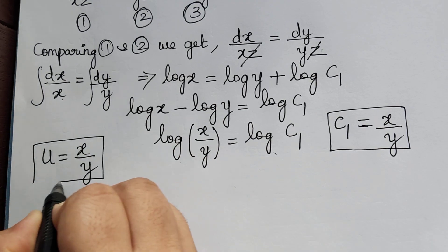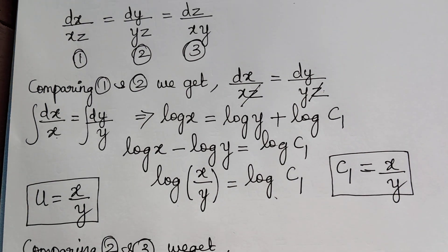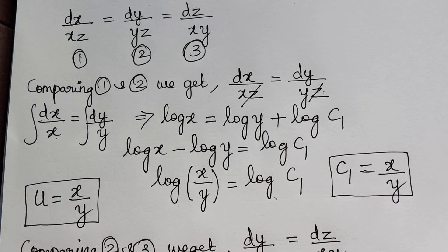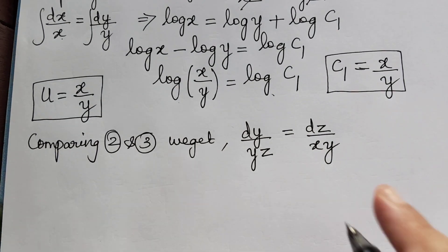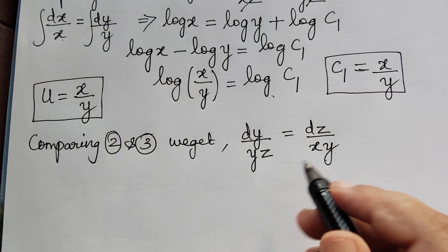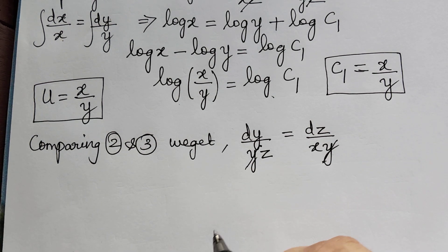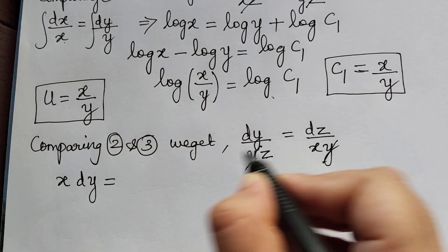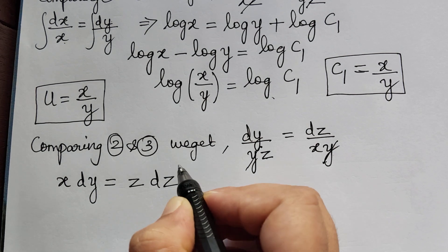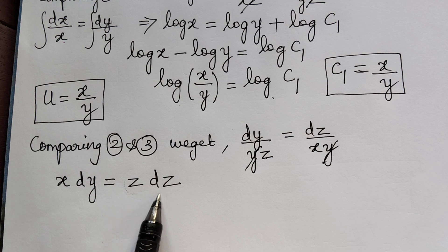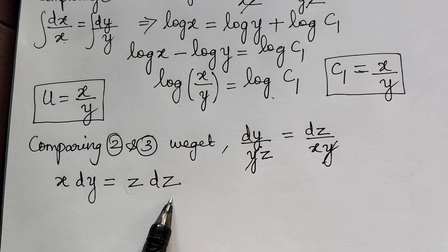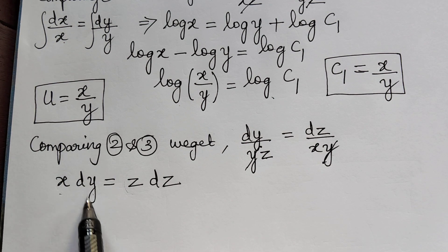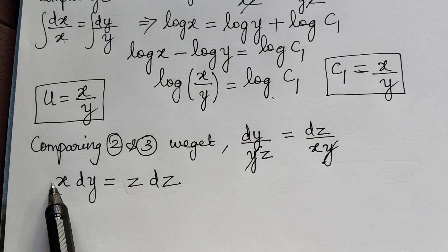Now we shall find the second solution v. Comparing equations 2 and 3, we get dy by y equal to dz by xy. We can cancel y on both sides and bring x to the left, giving x dy equal to z dz. However, on the left side we have x and y as different variables, so we cannot integrate the left-hand side directly.